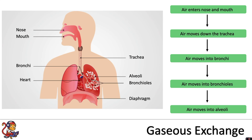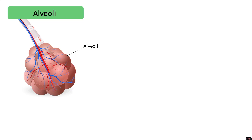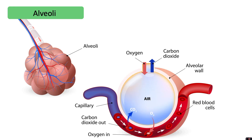Let's take a closer look at what the alveoli look like. The alveoli are air sacs and they have a close network of blood vessels called capillaries. If we look at a cross section here, we can see that the capillary runs very close to the wall of the alveoli. The capillary is the smallest blood vessel, and here you can see it is carrying red blood cells.